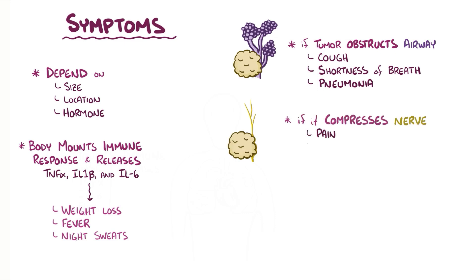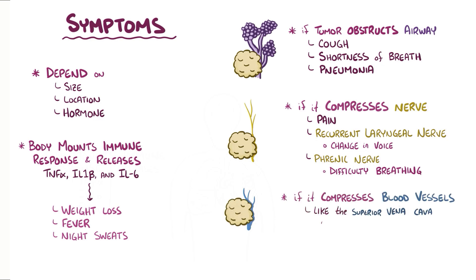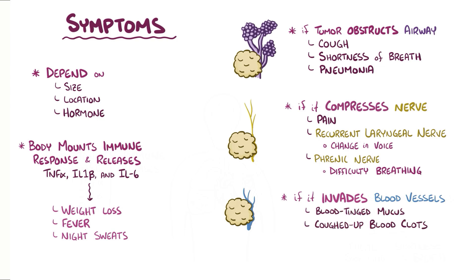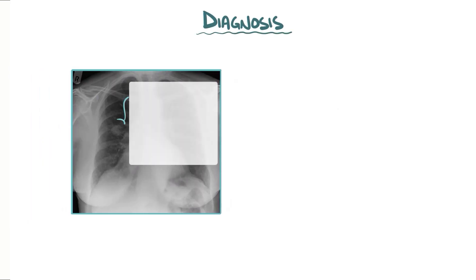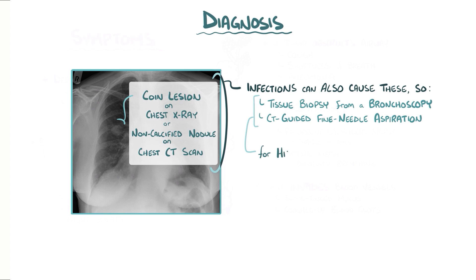Compression of nearby nerves can cause pain, and compression of specific nerves like the recurrent laryngeal nerve and phrenic nerves can cause changes in voice or difficulty breathing, respectively. Compression of nearby vessels like the superior vena cava can cause a backup of blood in the face, leading to facial swelling and shortness of breath. If a cancer cell invades into a blood vessel, mucus can get blood-tinged or blood clots can get coughed up. Initially, lung cancer is usually identified as a coin-shaped spot called a coin lesion on chest x-ray, or a non-calcified nodule on a chest CT scan. Since infections can also cause similar-shaped spots, a tissue biopsy from a bronchoscopy or a CT-guided fine needle aspiration is typically done to make a histopathologic diagnosis.